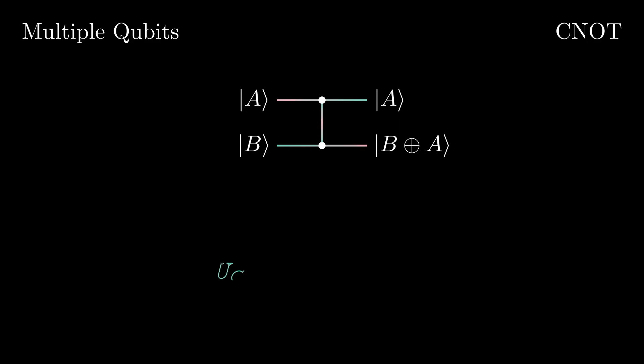If we define this quantum gate with a matrix, looking at each column of UCN, you can see that the first describes the transformation that occurs to 00, the second column for 01, and so on.